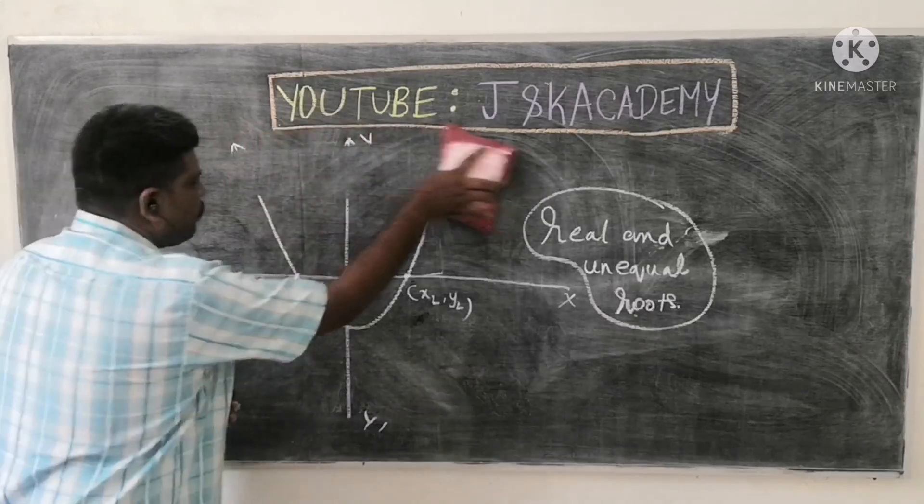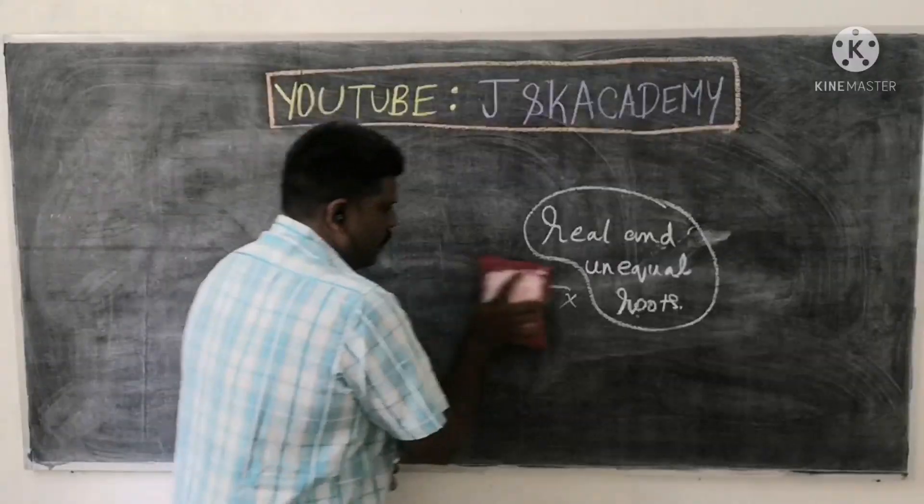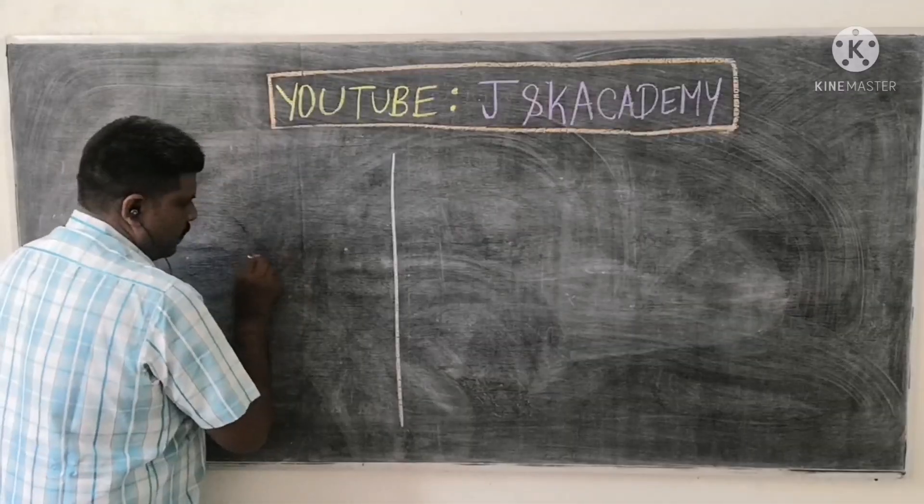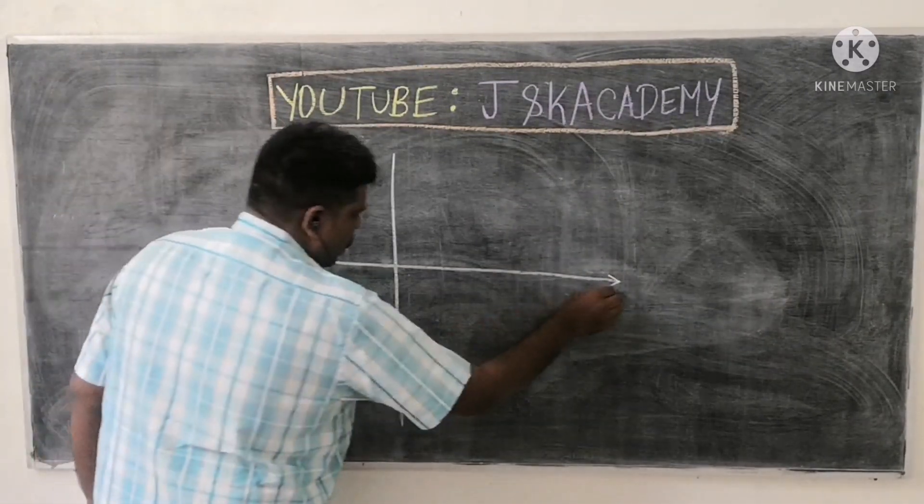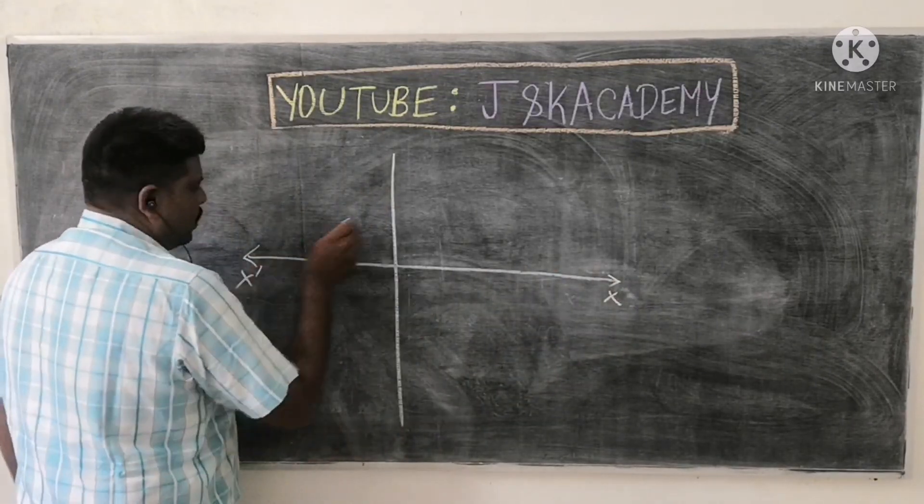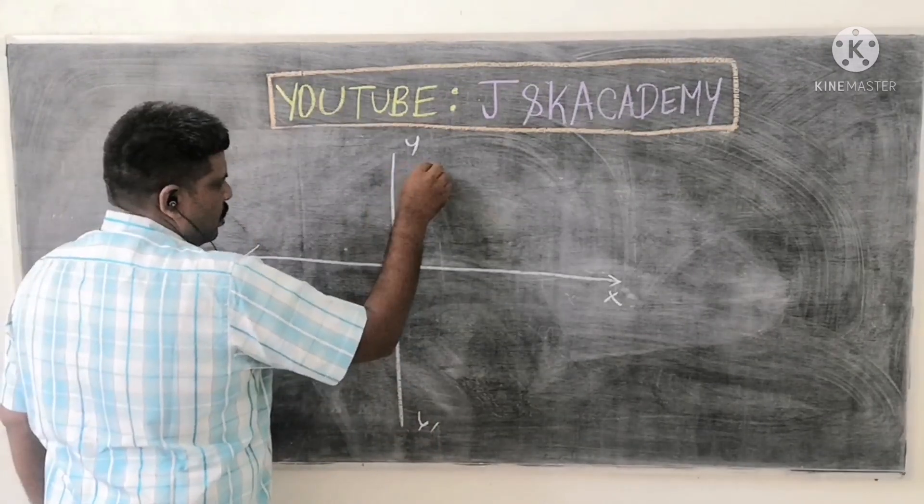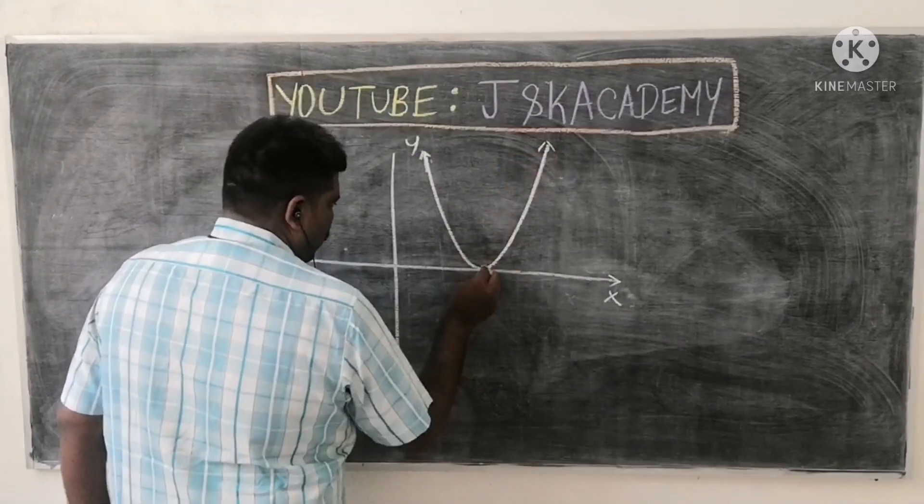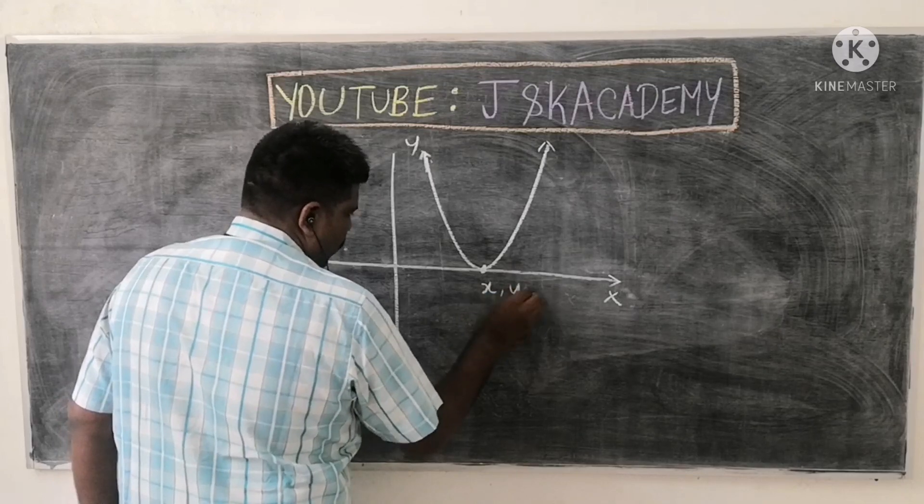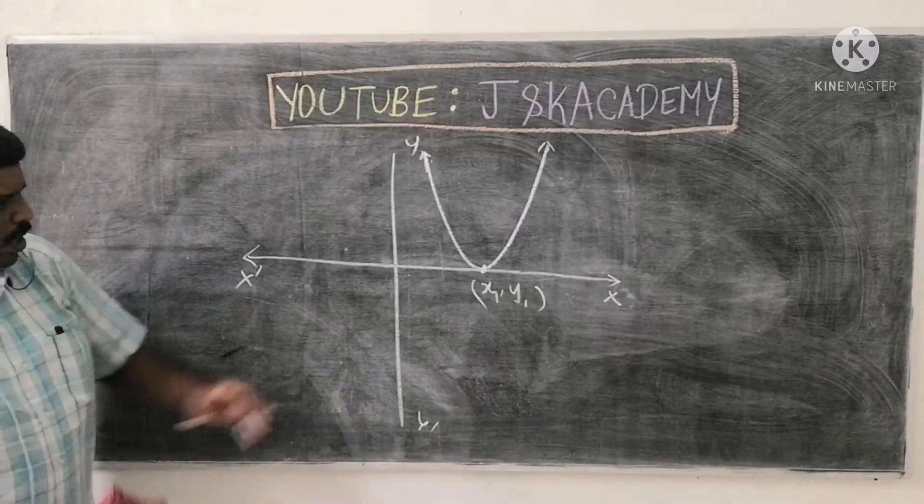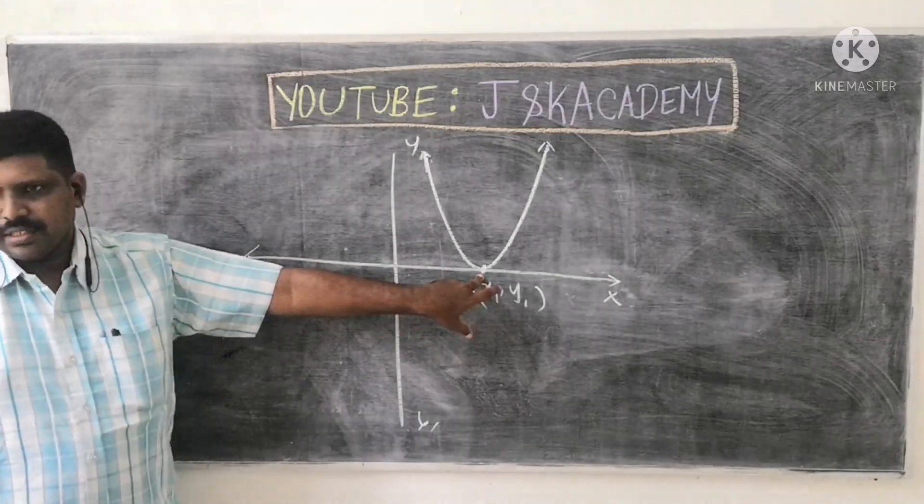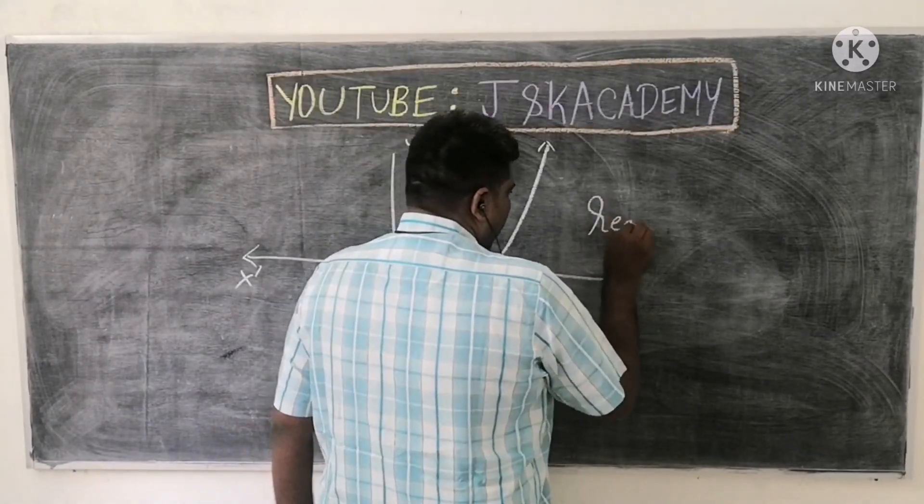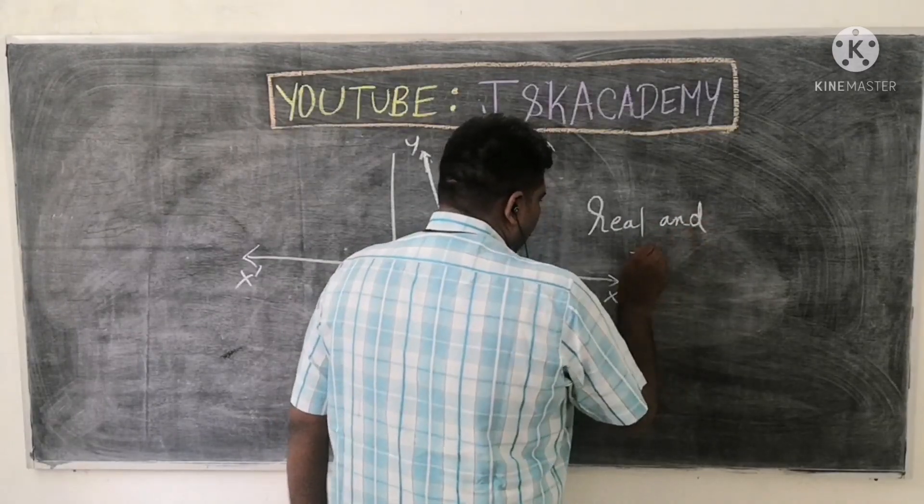Next graph. So next graph one. X, x, x dash, y, y dash. So Parabola, x axis, one point intersected. This way intersected. What is the real and equal roots? Real and equal roots.